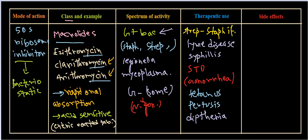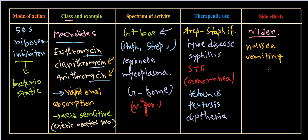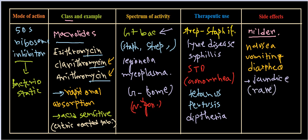An advantage of macrolide antibiotics is that they have very few and mild side effects. Common side effects are nausea and vomiting, and sometimes diarrhea. In very few cases, they can cause jaundice, and rarely hepatotoxicity. Otherwise, the symptoms are generally mild — nausea, vomiting, and diarrhea are most common if a large amount is taken over a short period. That concludes this introductory overview of macrolides.